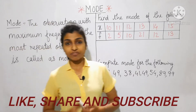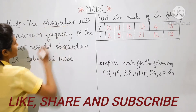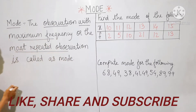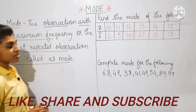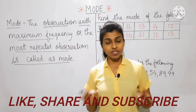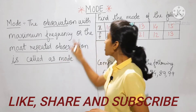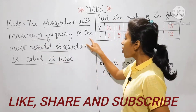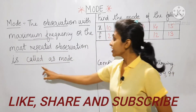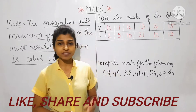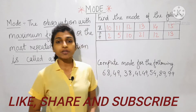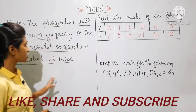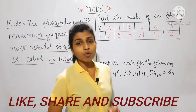The definition of mode is: the observation with maximum frequency, or the most repeated observation, is called mode. The observation can be from ungrouped data or grouped data. The observation or data with the maximum frequency — meaning the highest frequency — or the most repeated observation is called mode. We have already seen mean and median in my last two lectures; you can check the link in the description box.